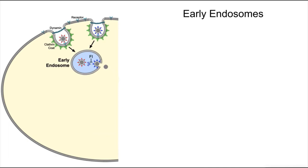Firstly, the early endosomes. These are formed when extracellular materials are endocytosed at the cell membrane. Specifically, they are formed following receptor-mediated fluid-based endocytosis. They are therefore located near the periphery of the cell.